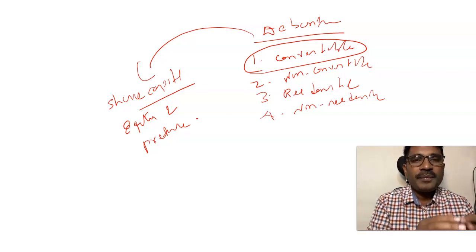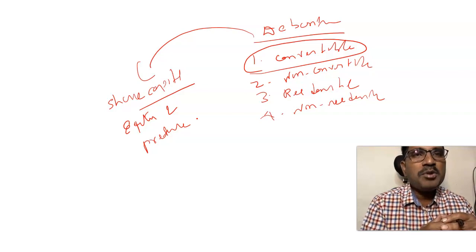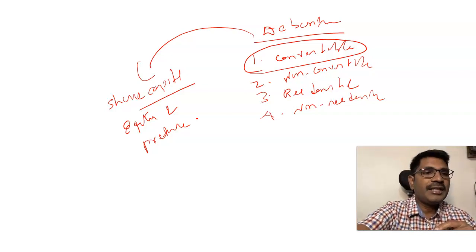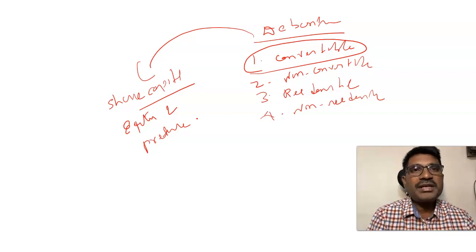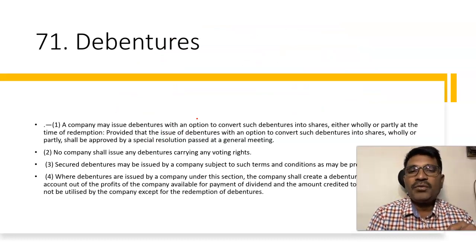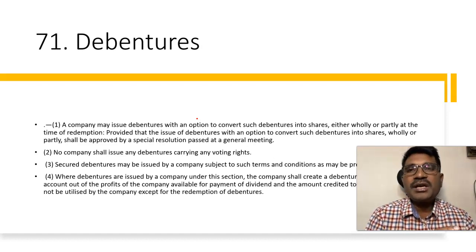Now let us see how far law recognizes these types of documents — convertible, non-convertible, redeemable, and non-redeemable — and how far law recognizes various types of debentures. As far as company law is concerned, we will see the provision in Section 71 of the Companies Act. We have only one prominent section, that is Section 71. For the next few minutes, we will discuss the legal aspects of Section 71 of the Companies Act, then move on to the Sahara judgment.